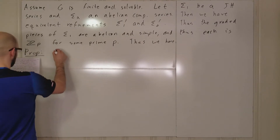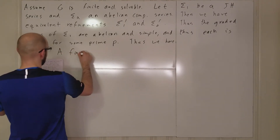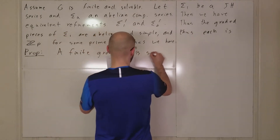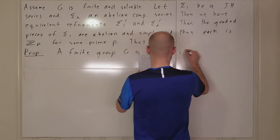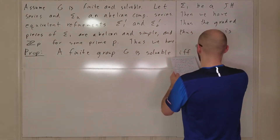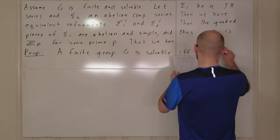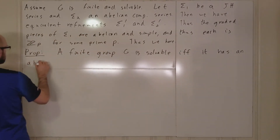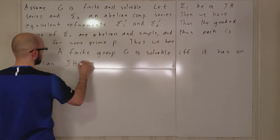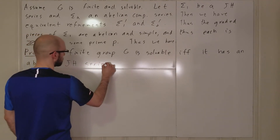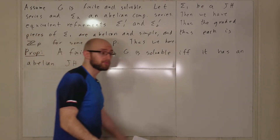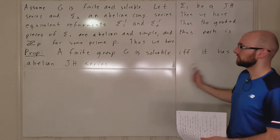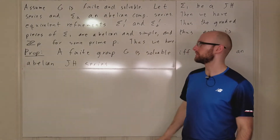Thus, a finite group G is solvable if and only if it has an Abelian Jordan-Hölder series. What we just discussed is one direction: we proved that if you have a finite group that is solvable, then it does have an Abelian Jordan-Hölder series — you just take a Jordan-Hölder series and you know it's Abelian.